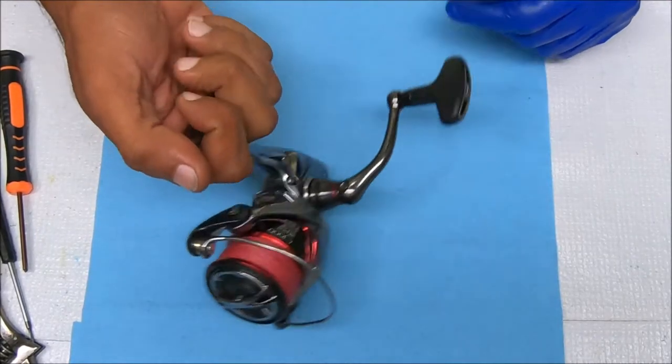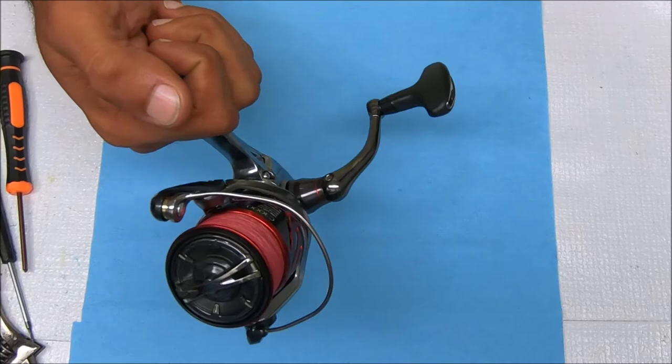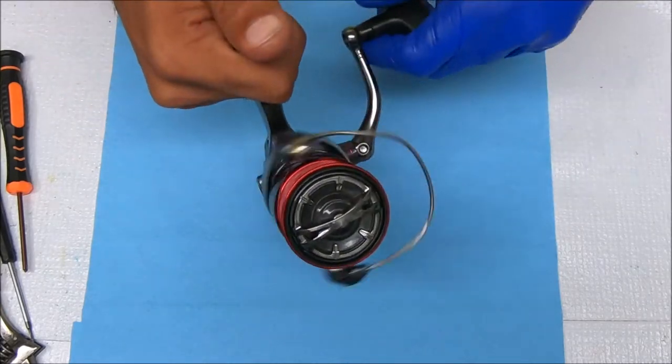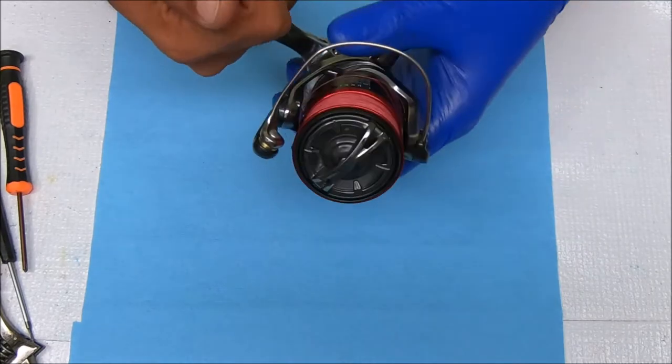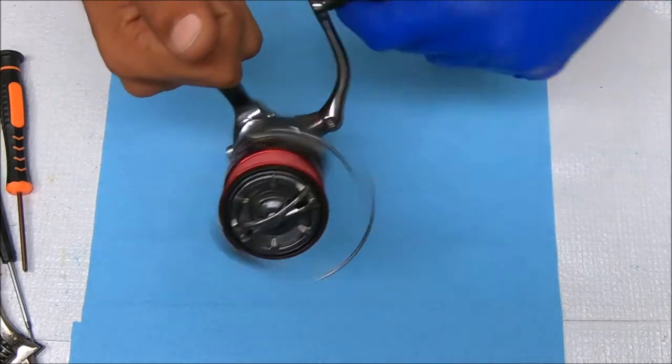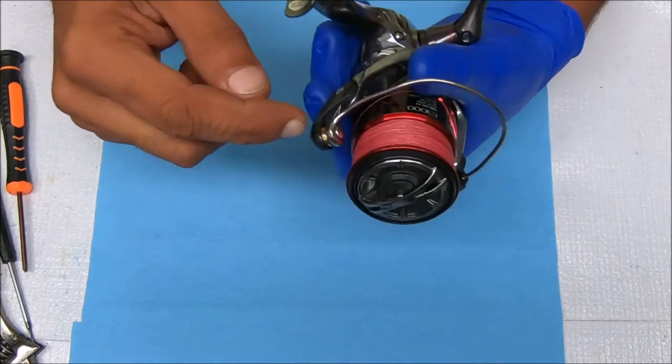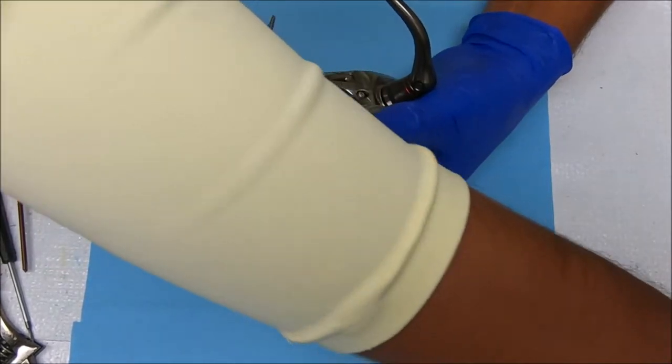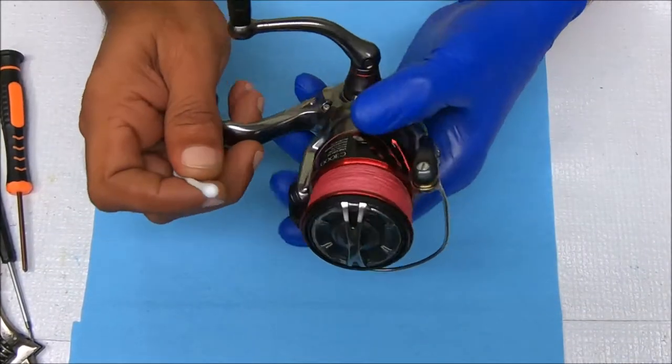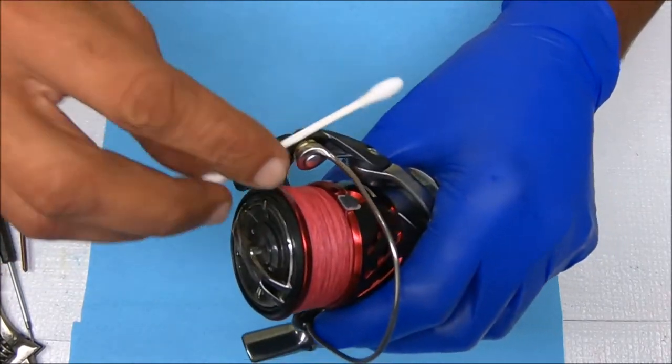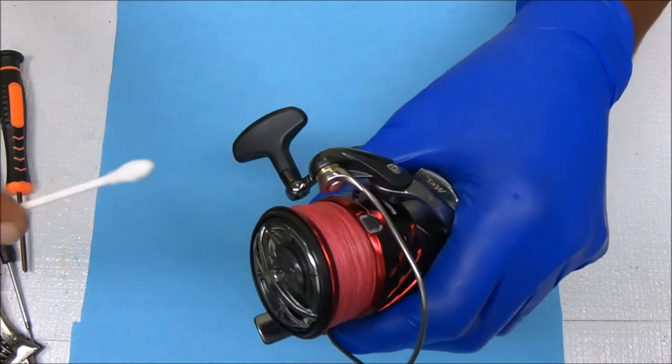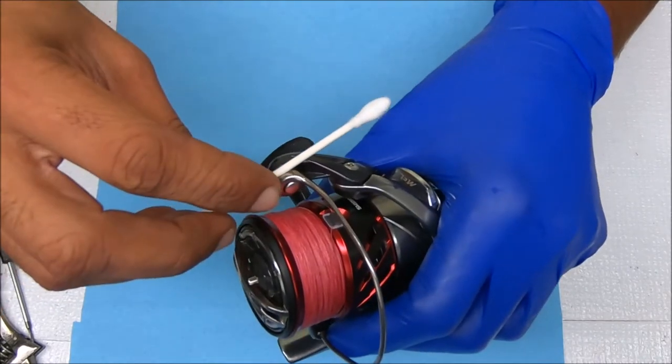Hey all, today we have a Shimano Stratik CI4 Plus 3000. Customer's saying it's making a lot of noise like sandpaper and it's not from the cranking, so it's mostly going to be from here. We're just going to verify. Obviously, as you know, if you have Shimano's or Stratik's, these bearings go bad quite a bit.